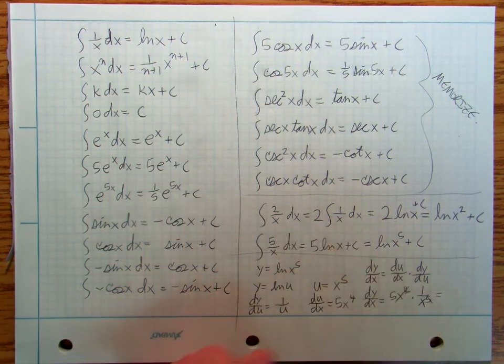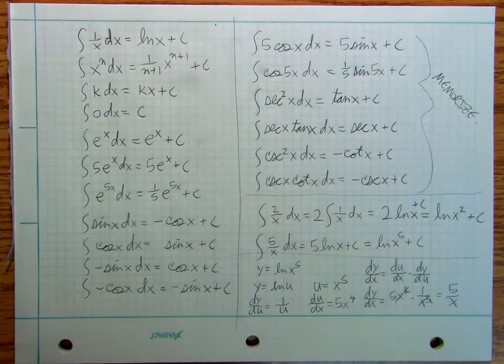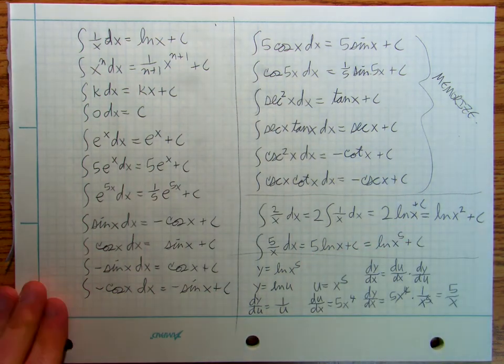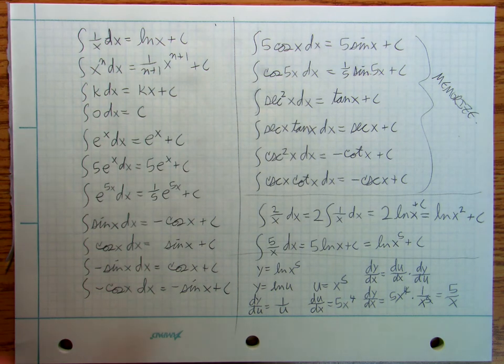So it's going to be 5x to the fourth times 1 over u, u is x to the fifth, and the x to the fourths are going to cancel all of those, except for 5 over x.